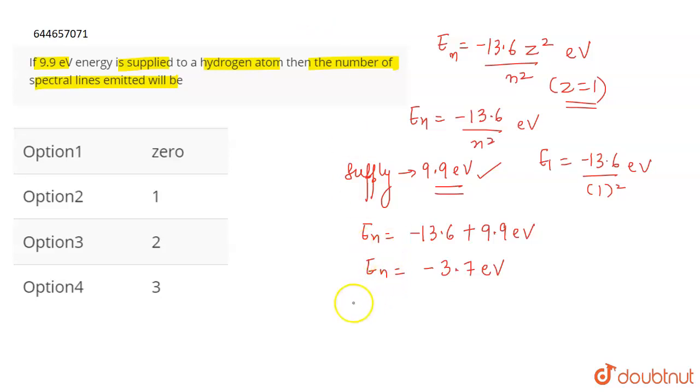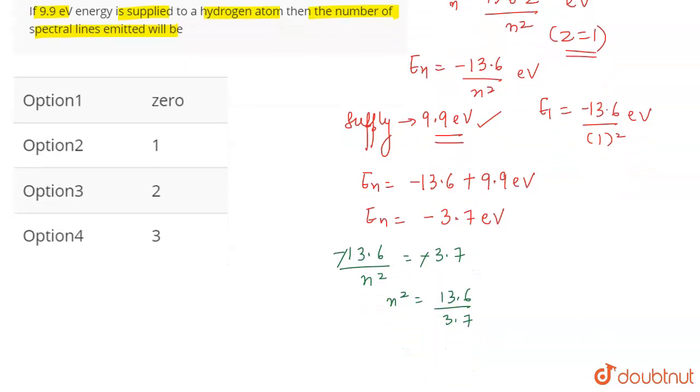We also know that for a hydrogen atom, the energy is equal to minus 13.6 divided by n squared, which is equal to minus 3.7. Minus and minus will get cancelled out. n squared will be 13.6 divided by 3.7, so from here on solving we will get the value of n nearly equal to 1.9.